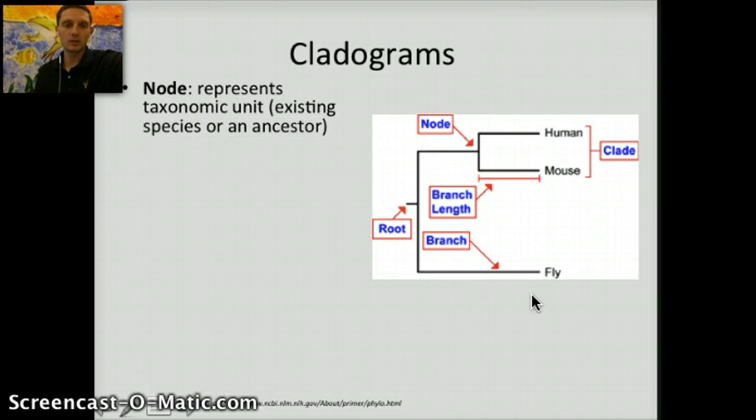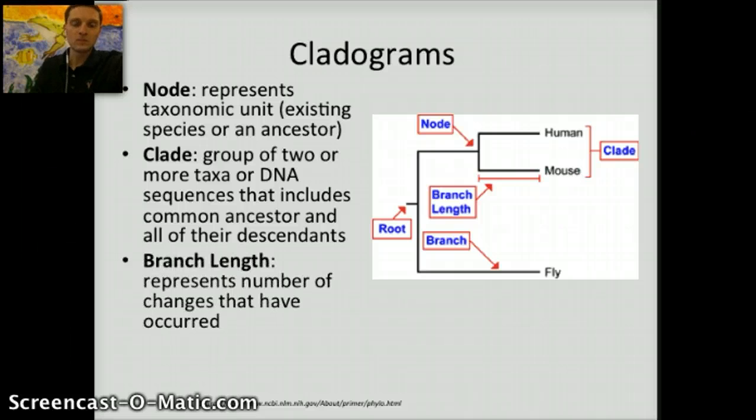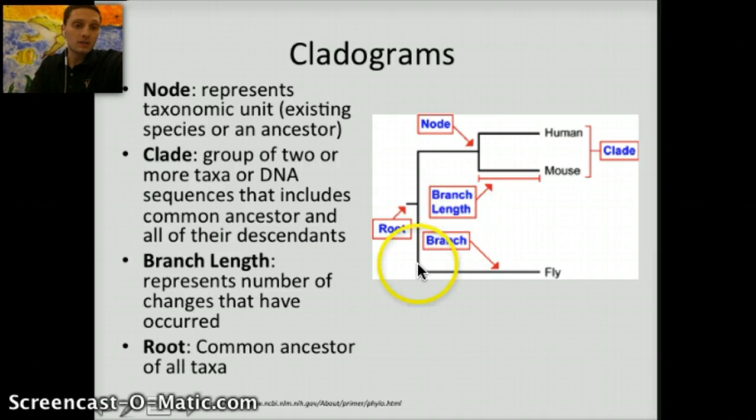Some different parts of a cladogram that we want to identify: A node represents a specific taxonomic unit consisting of a species and/or an ancestor. Here would be a node, right here, and these are the two taxonomic units or species included in that node. A clade is a group of two or more taxa, or DNA sequences, that includes a common ancestor and all of their descendants. This portion right here is a clade because it includes both the ancestor and the two or more descendants. Branch length represents the number of changes that could have occurred between the ancestral and present species. Lastly, we have a root, a common ancestor of all of the taxa in that cladogram.